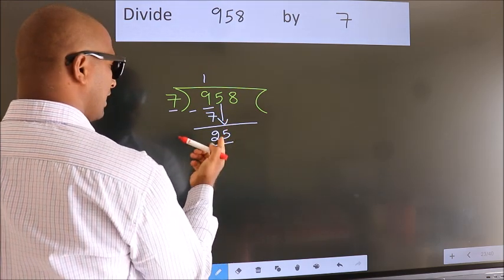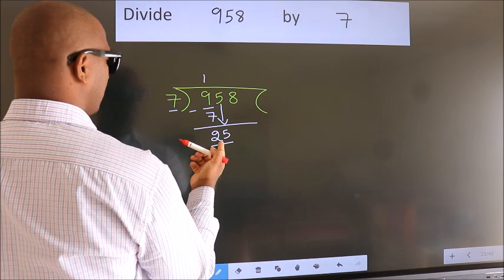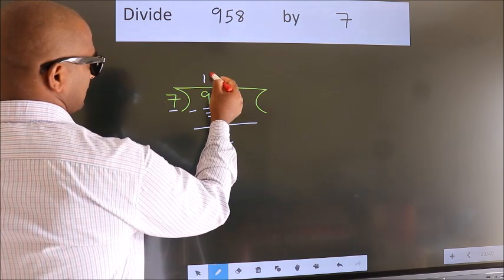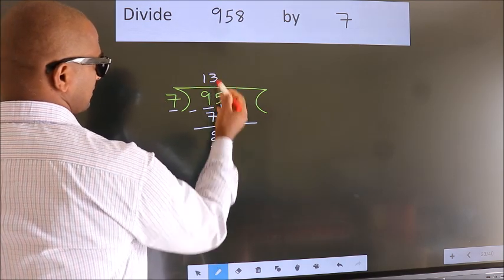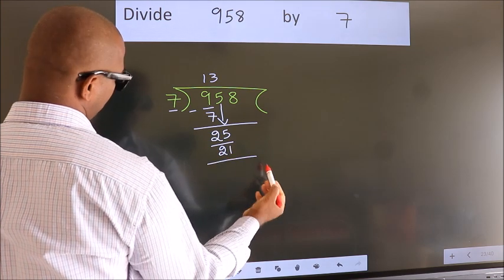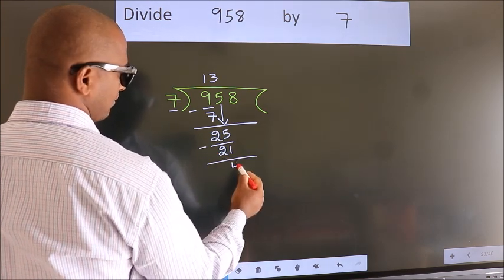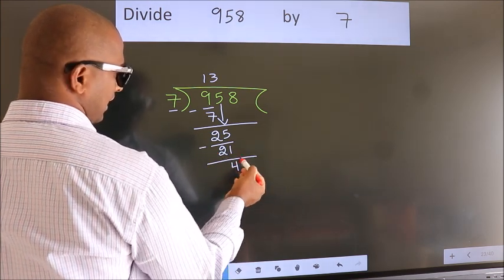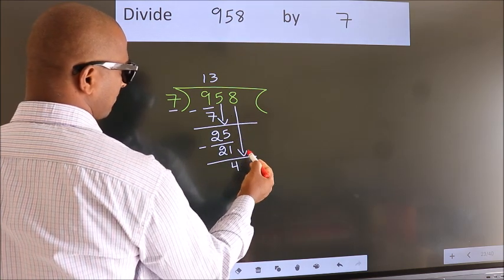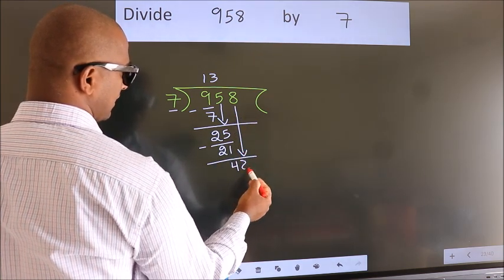So we have 25. A number close to 25 in the 7 times table is 7 threes, which is 21. Now we subtract and we get 4. After this, bring down the beside number — so 8 comes down.